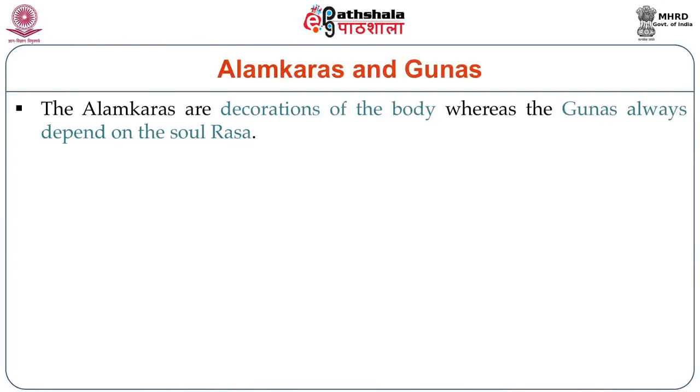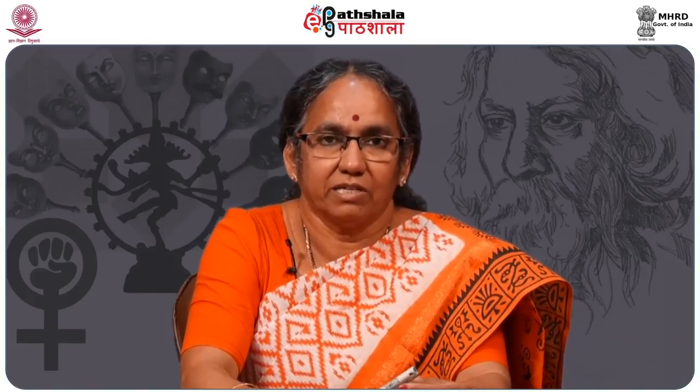In the second Udyota, he shows the difference between Alankaras and Gunas. Alankaras are the decorations of the body, whereas Gunas always depend on the soul — Rasa. The Alankaras like Upama, Rupaka, Samasokti, etc., are attached to the body — the word Shabda and the meaning Artha, Vachya. The expressed meaning and expression — and other parts of the poetry — are called figures of speech, in the same way as ornaments like bracelets and necklaces decorate the body.